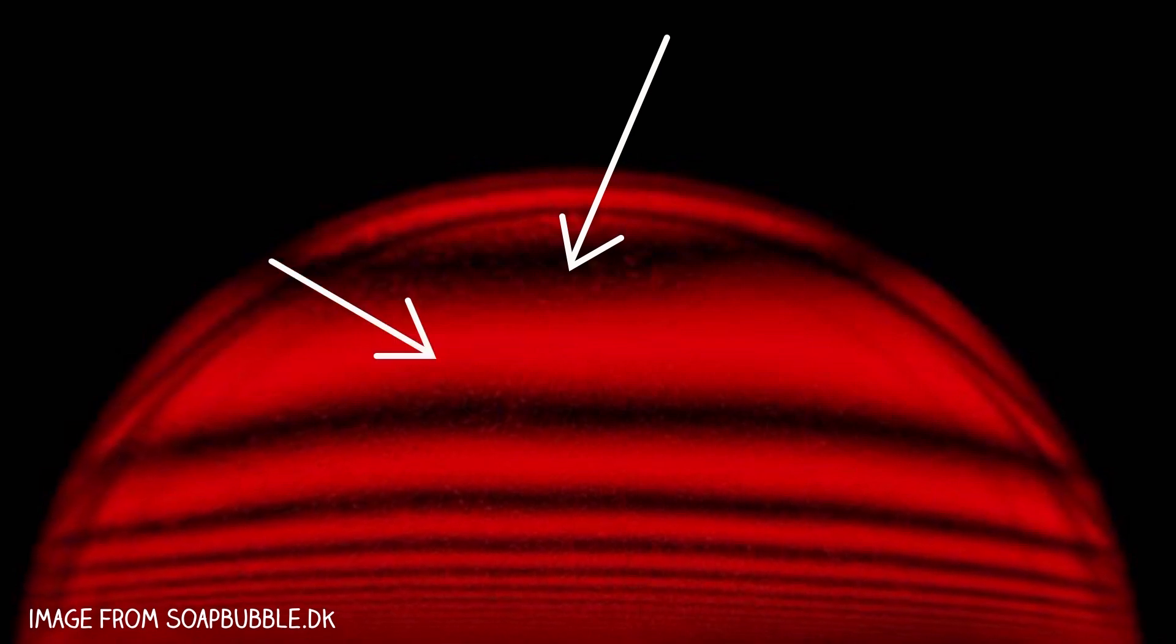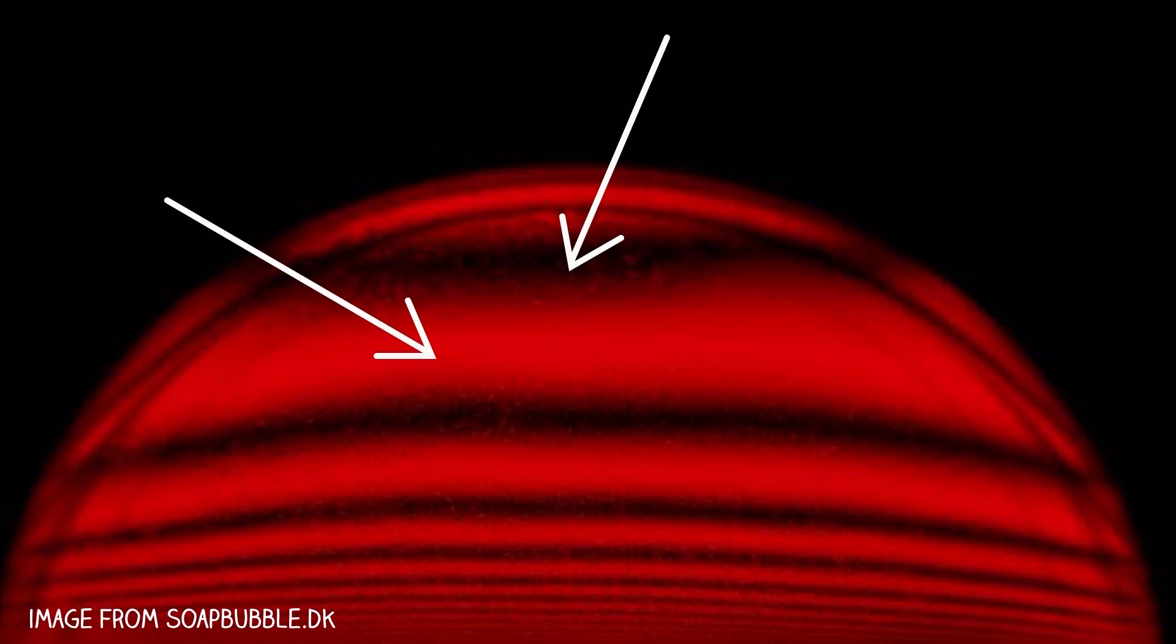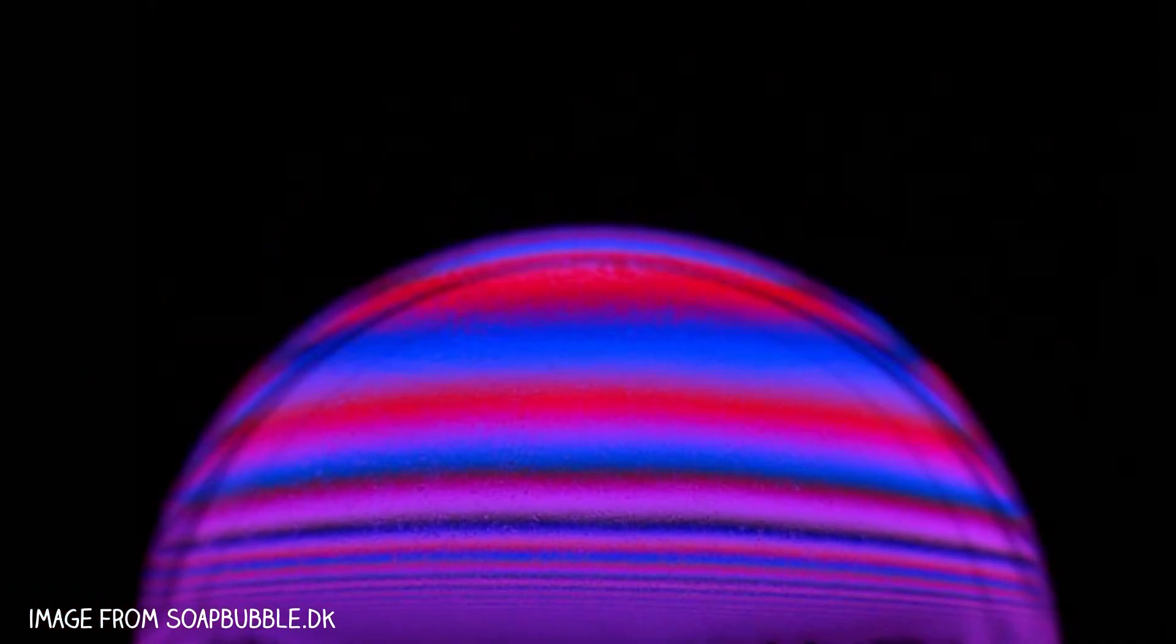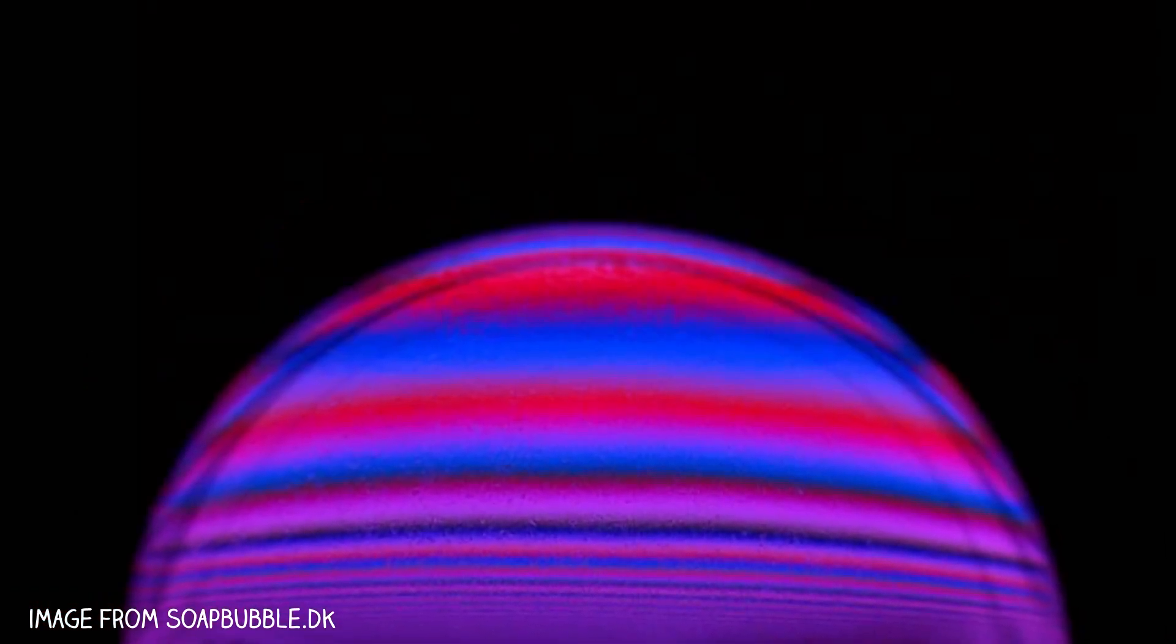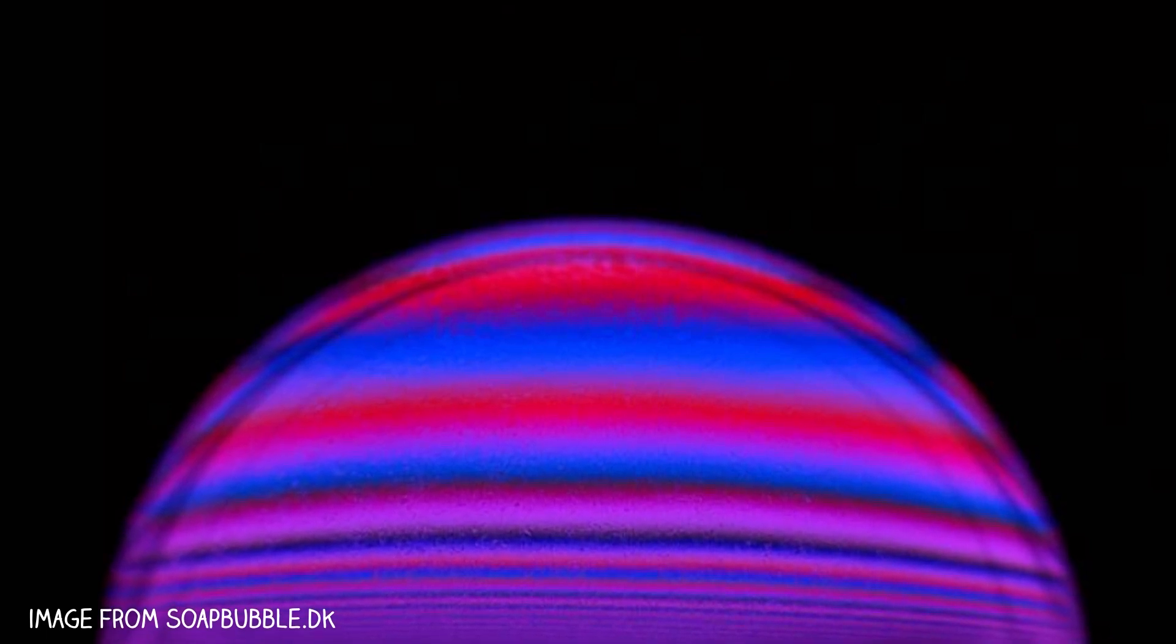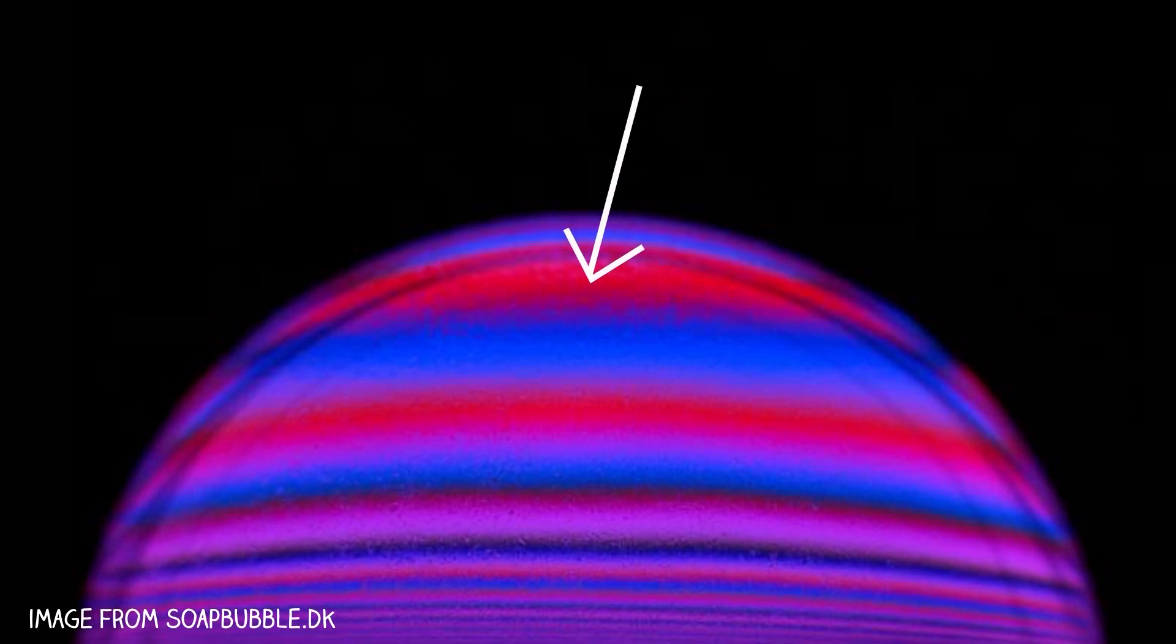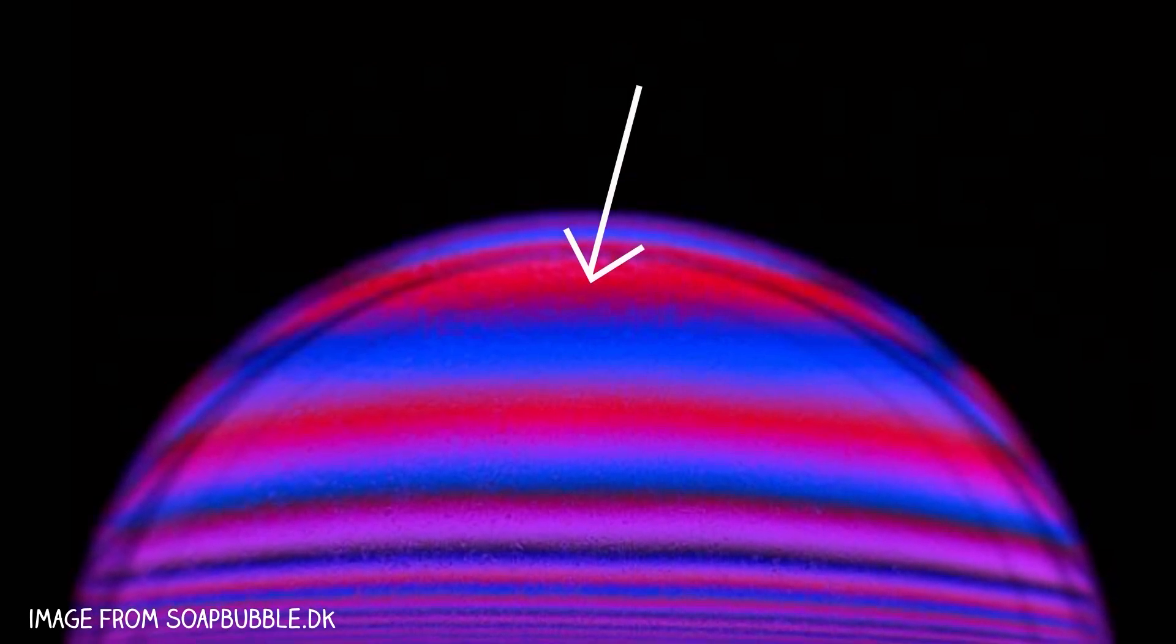The really vibrant areas are where reflection is around the 16% mark. To see how different colors interact, here's an image of a bubble illuminated with red and blue light. Notice the different thicknesses reflect some colors more strongly than others.